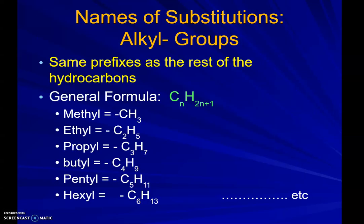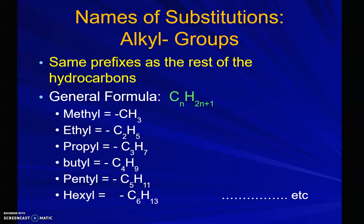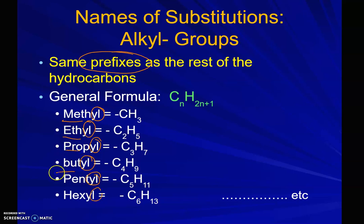These are called the alkyl groups, which are the substitutions in your hydrocarbon. They have the same prefixes as the rest of the hydrocarbons, but they end with -yl — for example, pentyl — for the alkyl group. You really only need to know maybe up to pentyl. They have the designation CnH2n+1 because they have this availability to bond to the carbon chain.